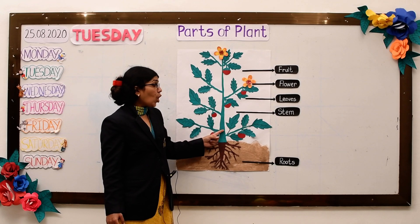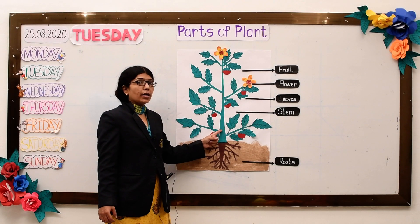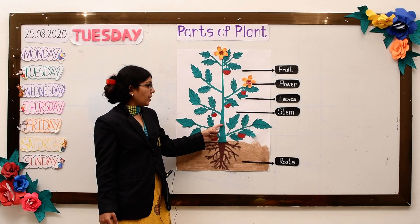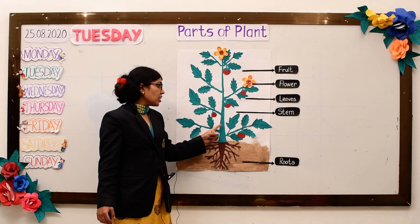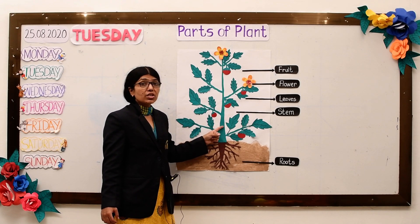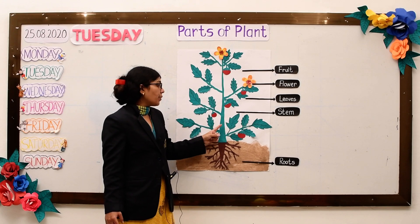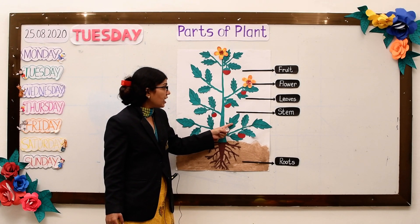The stem moves water up to the plant, up to the plant. The stem moves water up to the plant — bring water to the leaves.